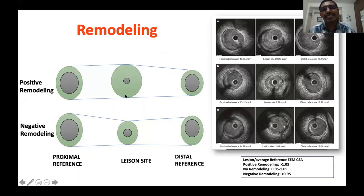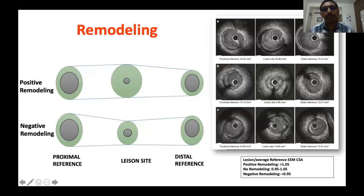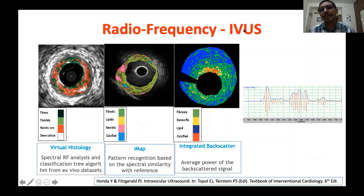Remodeling is a change in vessel size at the lesion site compared to reference segments. If it is bigger it is called positive remodeling; if smaller it is called negative remodeling. Here you see two reference segments where the disease segment is smaller — that is negative remodeling, typically in chronic stable angina patients. Here the disease segment is bigger than the reference — that is positive remodeling, usually occurring in ACS patients.